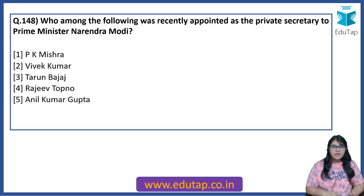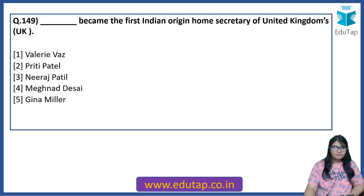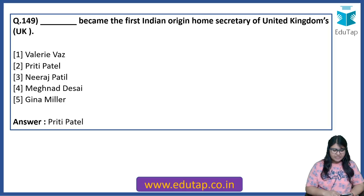Who among the following was recently appointed as the private secretary to Prime Minister Narendra Modi? The answer is Vivek Kumar. Dash became the first Indian-origin Home Secretary of the United Kingdom — the answer is Priti Patel. She has become the first Indian-origin Home Secretary of the UK.